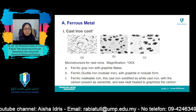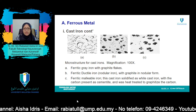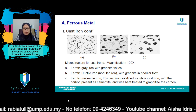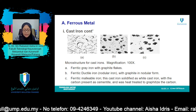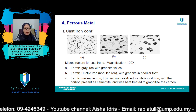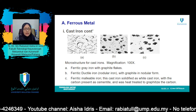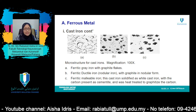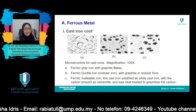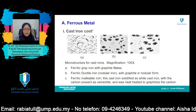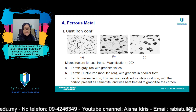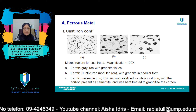For gray cast iron, the carbon and silicon contents vary from approximately 2 to 4 weight percent carbon and 1 to 3 weight percent silicon respectively. For most gray cast iron, the graphite exists in the form of flakes which are normally surrounded by an alpha ferrite or pearlite matrix. The microstructure of a typical gray iron is shown in figure A. Because of these graphite flakes, a fracture surface takes on a gray appearance — hence the name gray cast iron.